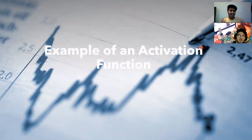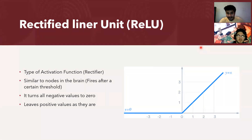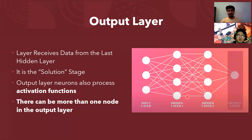One type of activation function is the Rectified Linear Unit, or ReLU. It's simple: similar to how a biological neuron fires only above a threshold, ReLU removes negative values entirely and only passes through positive values. If it's a negative value, it doesn't fire at all; only positive values activate. That's basically what the ReLU activation function does.